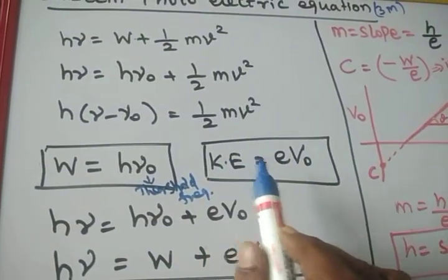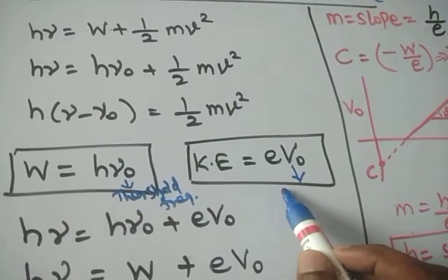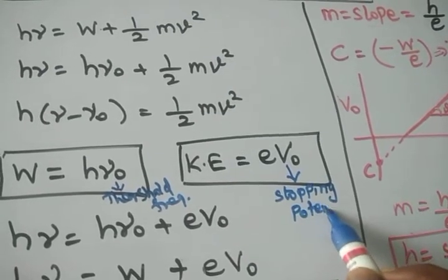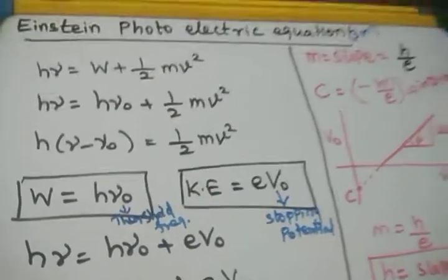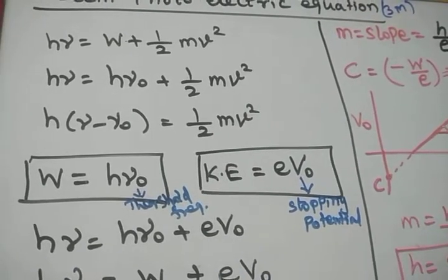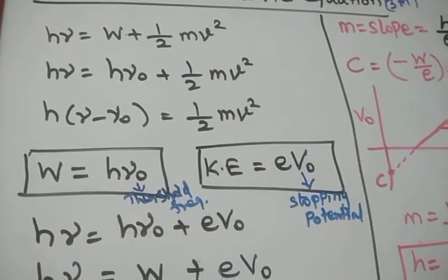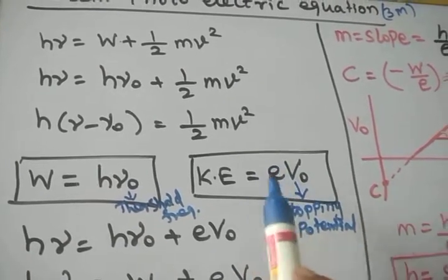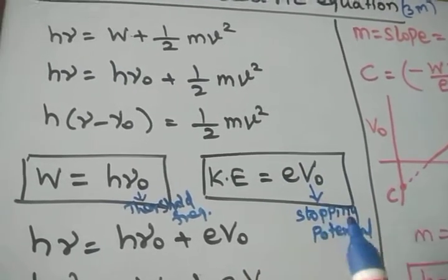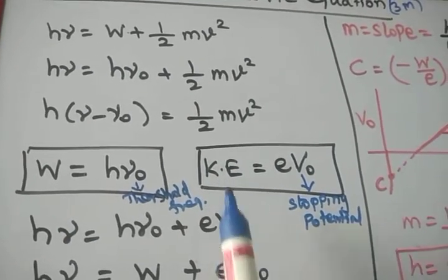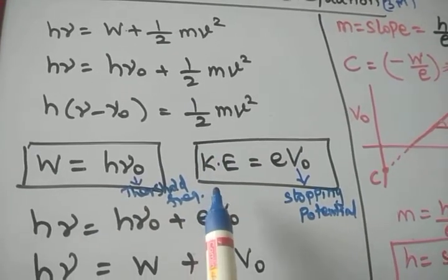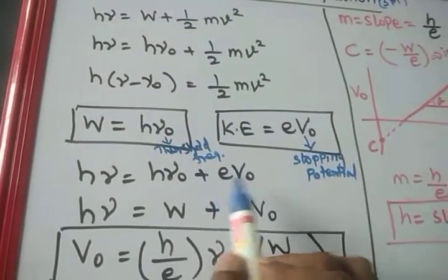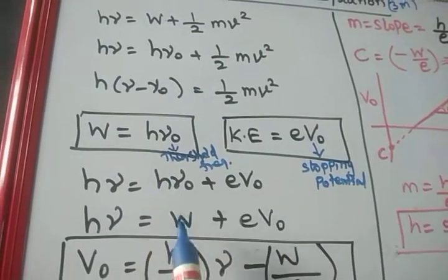In place of kinetic energy, we can substitute eV-naught, where V-naught is called the stopping potential. Even though the incident radiation frequency is greater than the threshold frequency and photoelectric emission happens, if a reverse voltage is applied, there will be a reverse potential. The minimum reverse potential required to stop the photoelectric emission is called stopping potential. It is equal to the kinetic energy of the photoelectron emitted, so we substitute eV-naught in place of kinetic energy.